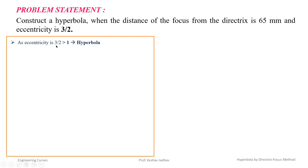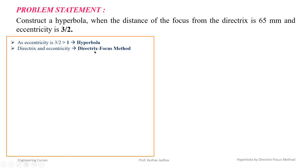If eccentricity is greater than 1 then it is a hyperbola, and here the distance of the focus from the directrix is given, which means we can draw this hyperbola by the directrix focus method. Let us draw this hyperbola by the directrix focus method step by step.